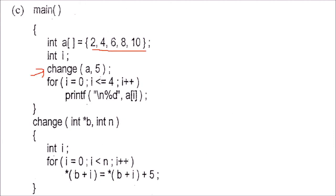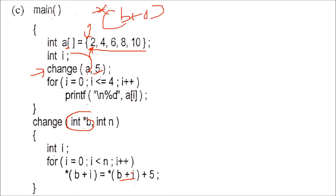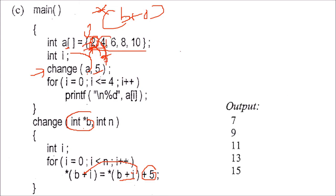We have passed the array address to a function. Inside the function, pointer b takes the address of array A. For i=0, star(b+0) gives value 2, which is then added with 5 and assigned back, making it 7. Similarly 4+5=9, 6+5=11, 8+5=13, 10+5=15. So the output is 7, 9, 11, 13, 15.